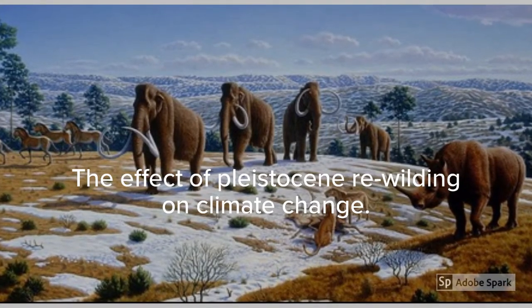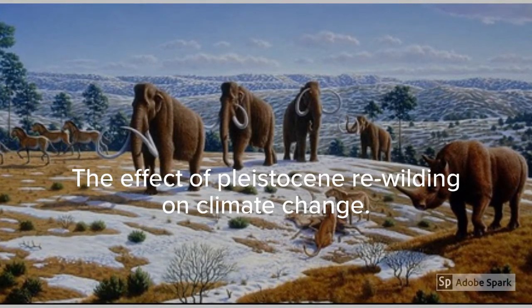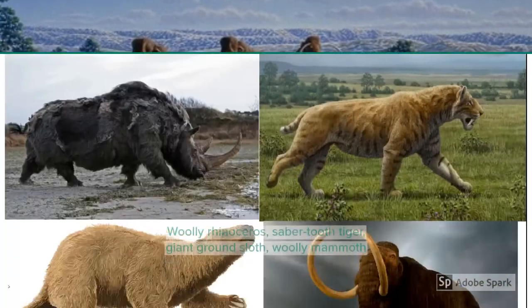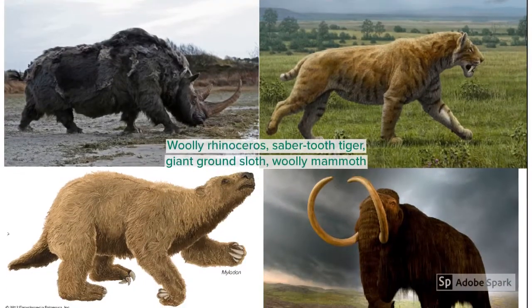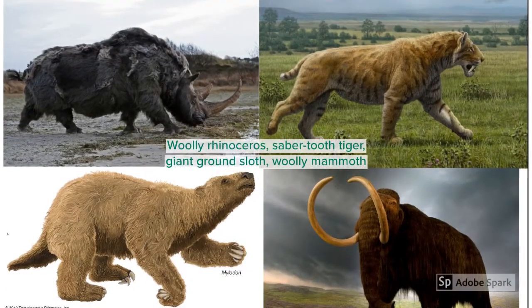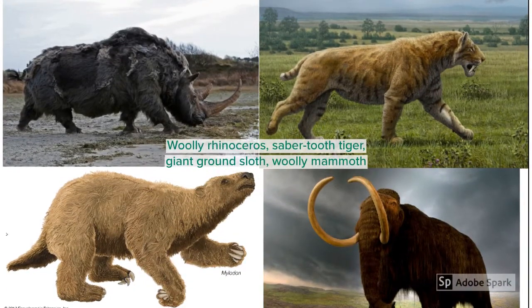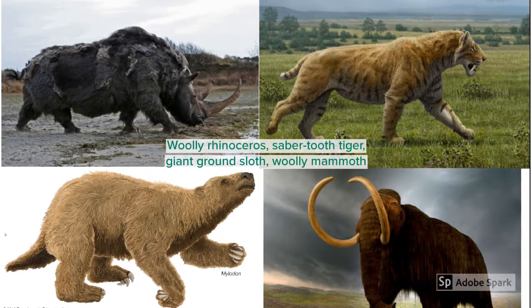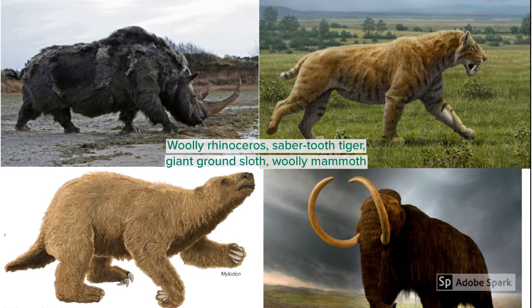In this clip, we'll discuss the effect of Pleistocene rewilding on climate change. The end of the last ice age, also known as the late Pleistocene, lasted from 130,000 BCE to 8,000 BCE.